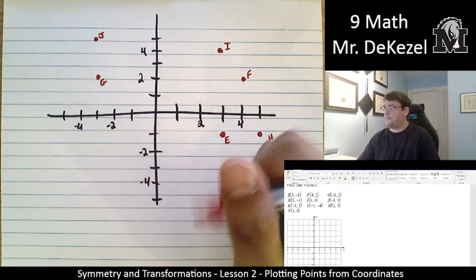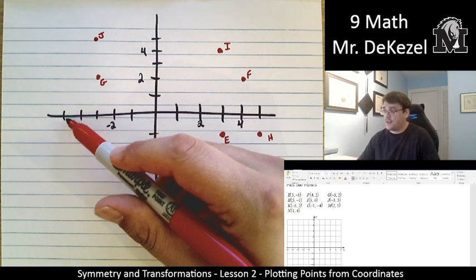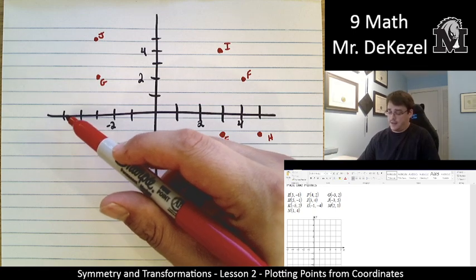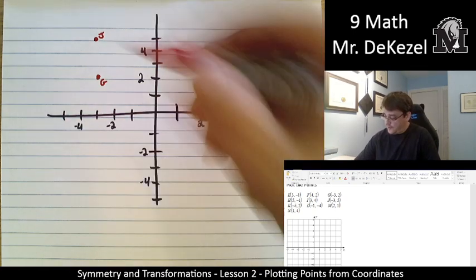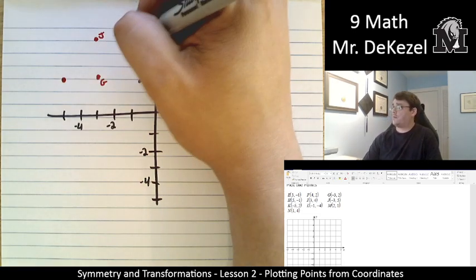Let's do K. Minus 5 and 2. So 1, 2, 3, 4, 5 to the left for the minus 5. And then the second part is plus 2, so it's going to go up 2. So that's right here. And I said that that was point K.